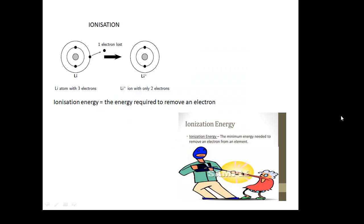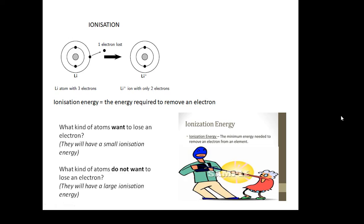Ionisation. This is something we need to know about. Ionisation energy is the energy needed to take away an electron. The first ionisation energy is all we're interested in—the energy needed to take away one electron from an atom, the minimum energy needed to remove an electron. What kind of atoms want to lose an electron? These atoms will have a small ionisation energy. What kind of atoms don't want to lose an electron? They will have a large ionisation energy. Remember that atoms want to have a full outer shell. Atoms which only have one or two electrons will want to lose those electrons. Atoms which nearly have a full outer shell will want to gain electrons.